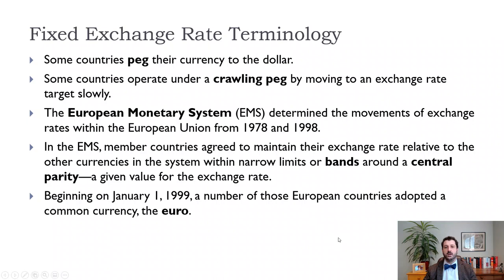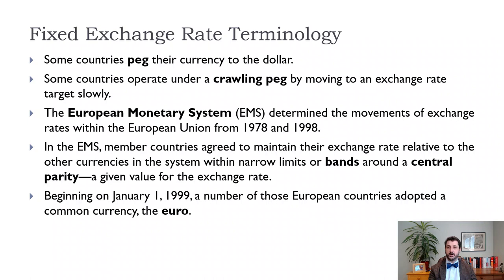By 1999, most of those European countries adopted the euro, which meant they basically gave up monetary policy for their own national economy. Monetary policy is now run by the European Central Bank. That proved to be somewhat of a challenge after the financial crisis, where some countries really needed loose monetary policy and other countries needed tighter monetary policy, but they had to have a monetary policy that fit everybody, which was not perfect. We'll talk about that more in Chapter 20.